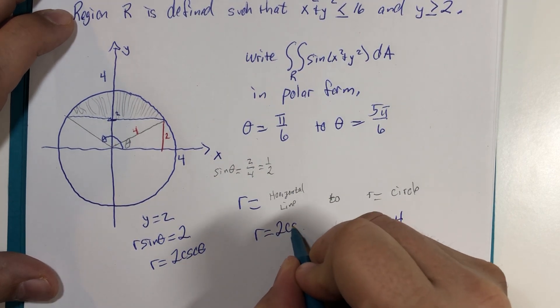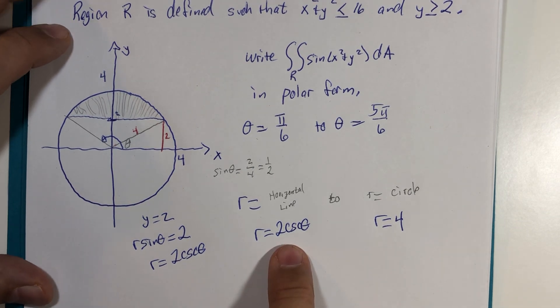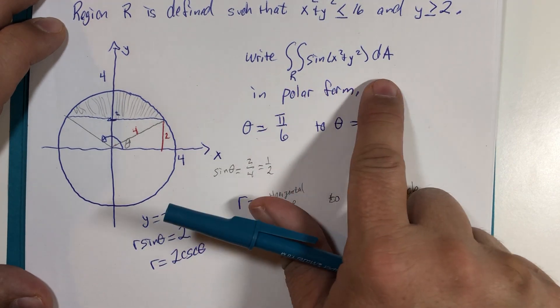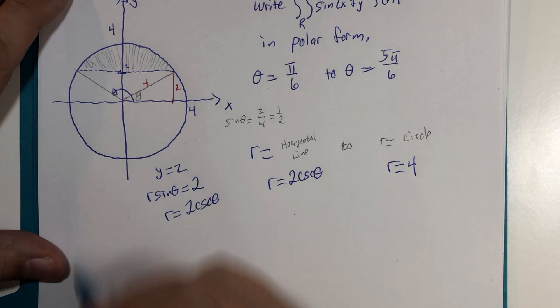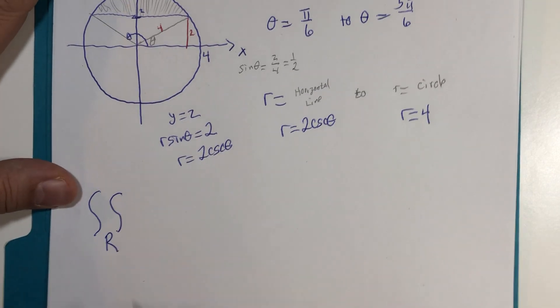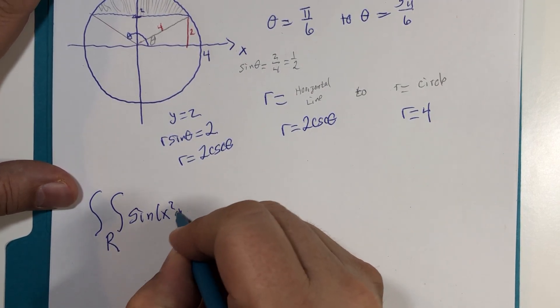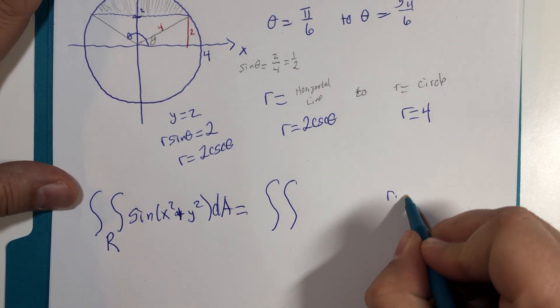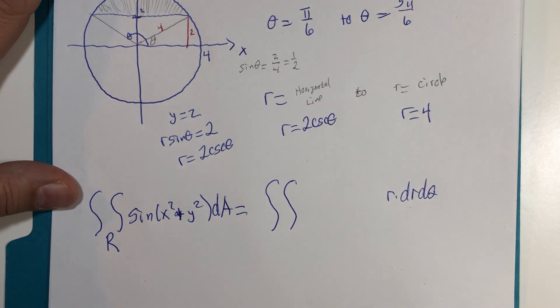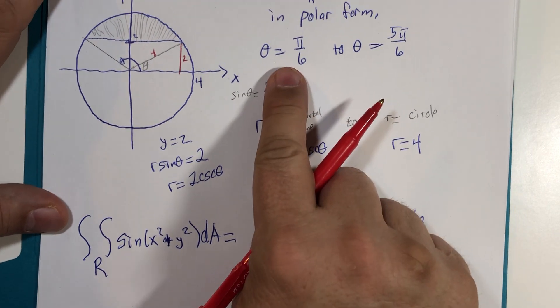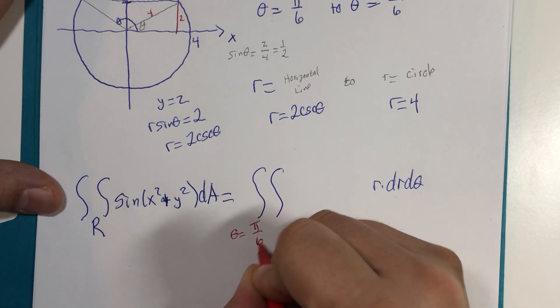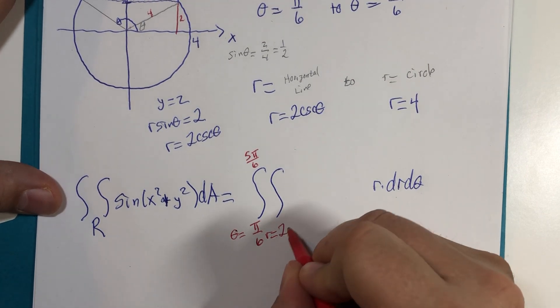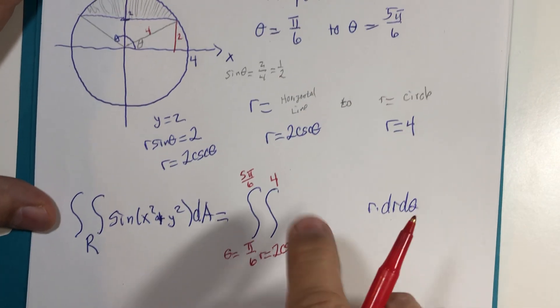Finally, we'll take our theta and our limits of integration, or as I'm calling them, our boundaries, and write them into our double integral. So we have a desire to write x squared plus y squared into polar. So dA becomes r times dr d theta. Our theta boundaries were pi over 6 to 5 pi over 6, and our r boundaries are from 2 cosecant theta to 4. And last but not least,